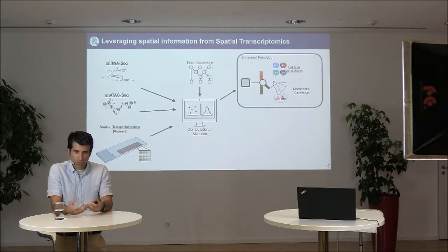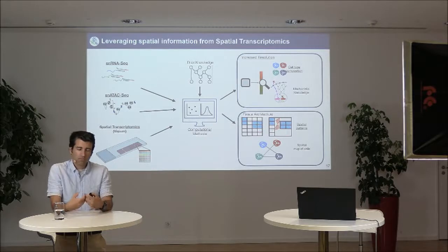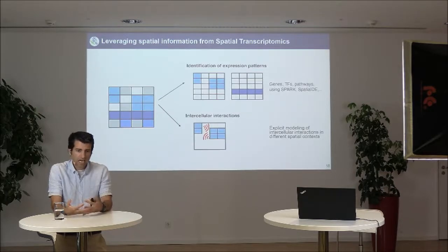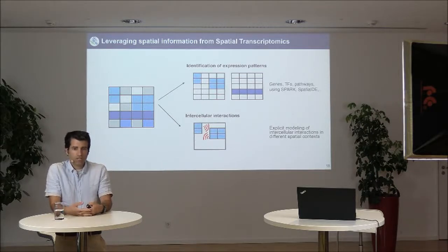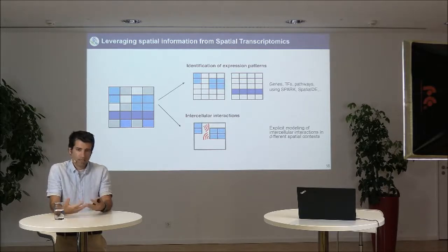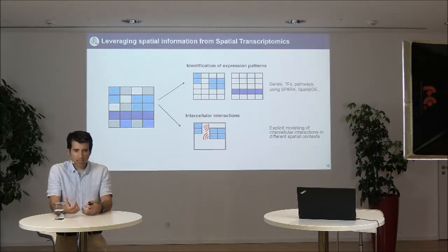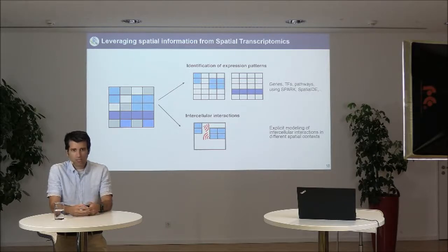That was the first type of approach — improving resolution and extracting mechanistic insight from spatial transcriptomic data. But actually, all we were doing was looking at one spot at a time; we were not really using the fact that we know which spot is the neighbor of which. The second type of analysis really exploits the spatial information to learn about tissue architecture — looking for spatial patterns in the data at the gene level or at the pathway and transcription factor level, and trying to find interactions between cell types where features in some spots are predictive of what happens in neighboring spots.